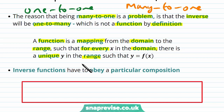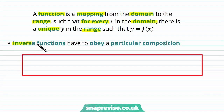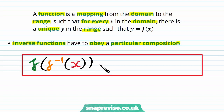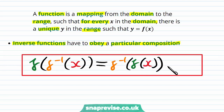In that case the output would not be unique, and hence the inverse would not be a function at all. Now inverse functions must obey a particular composition: when you apply f to f inverse of x, you get x; and when you apply f inverse to f of x, you also get x.